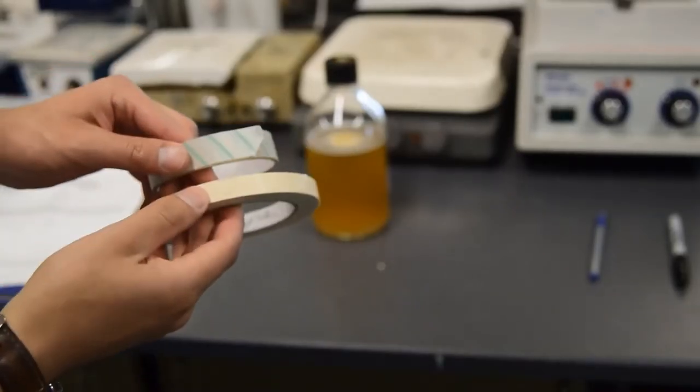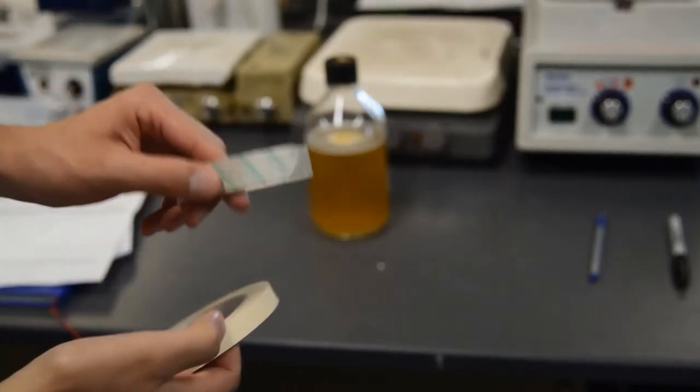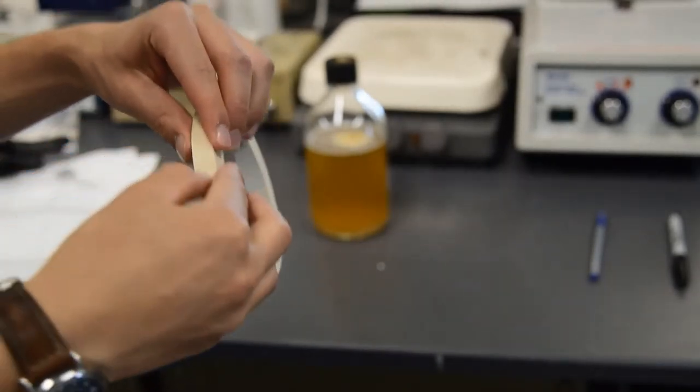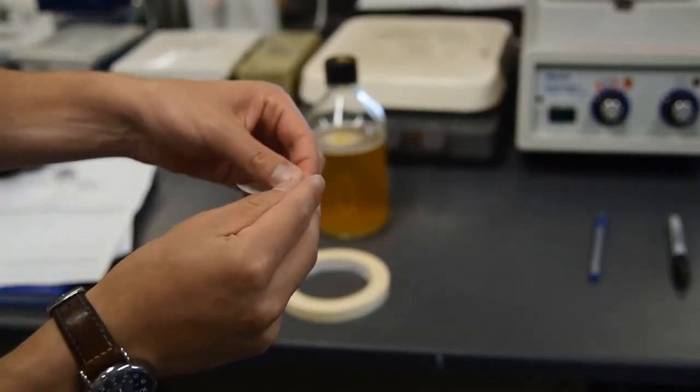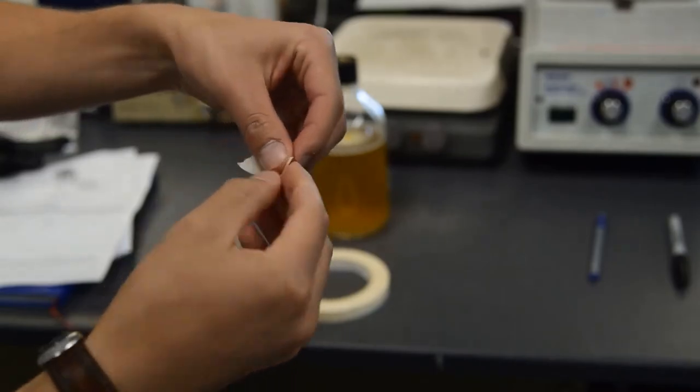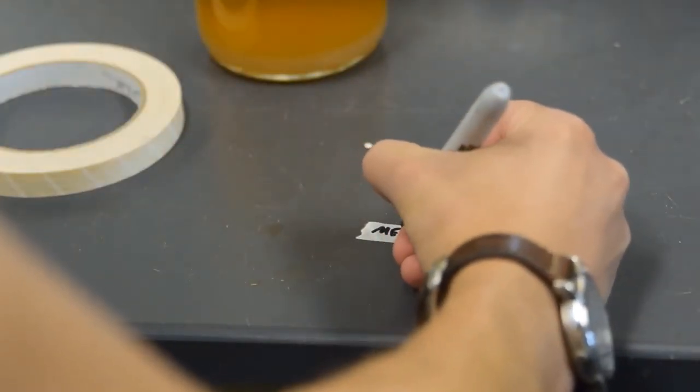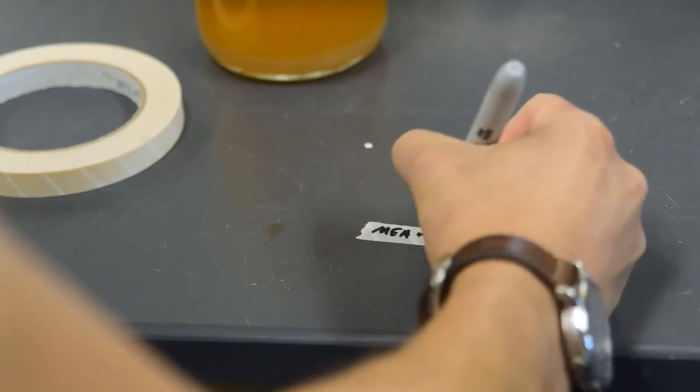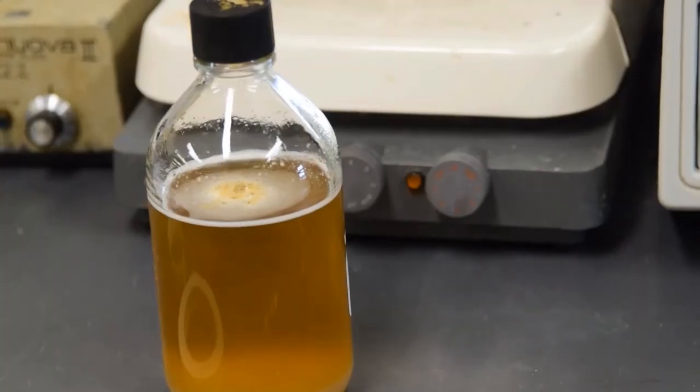Now we need to put autoclave tape on it. This tape changes color once it's been autoclaved, and there's two different kinds. We're going to use this kind. I'm just going to tear a piece and fold over the end. This allows it to be put down on a surface and picked up more easily. Going to write the media type on the piece of tape and then apply the tape to the bottle across the seal line.